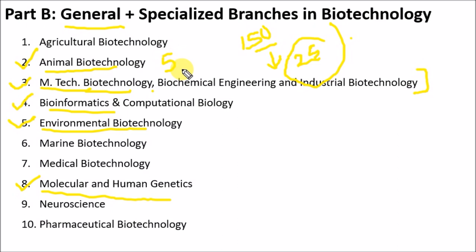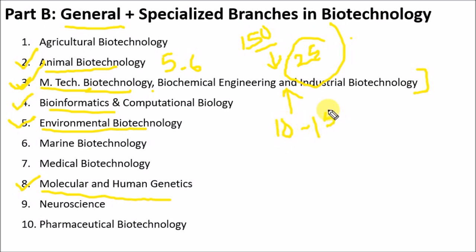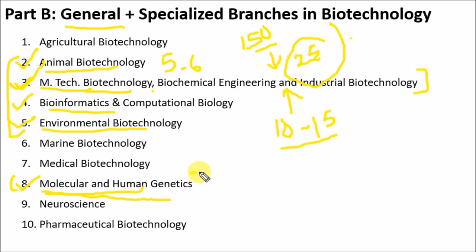Mainly five to six questions — or more — come from each chapter. From the M.Tech biotechnology, biochemical engineering, and industrial biotechnology chapter, 10 to 15 questions appear in the DBT JRF paper, so it will help you a lot. Please don't read all chapters in the given syllabus — focus only on these selected chapters. Note that molecular and human genetics is already included in general biotechnology, and industrial biotechnology includes environmental biotechnology.